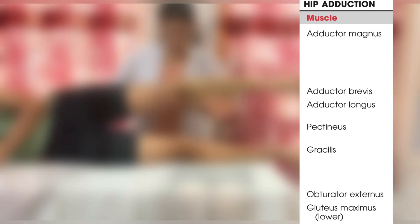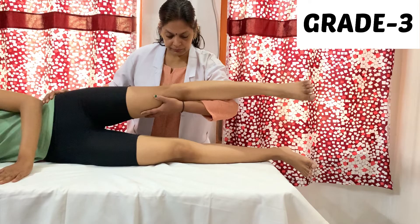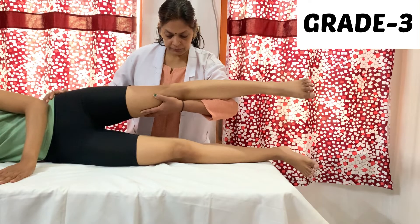Now I will tell you about hip adduction MMT. The major muscles involved in hip adduction are adductor magnus, adductor brevis, adductor longus, pectineus, and gracilis. Other muscles are obturator externus and the lower fibers of gluteus maximus. The normal range of motion is 0 to 15–20 degrees.